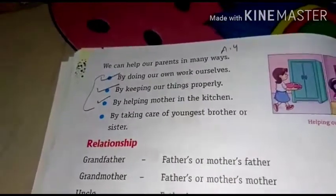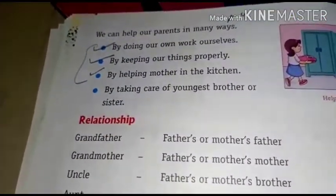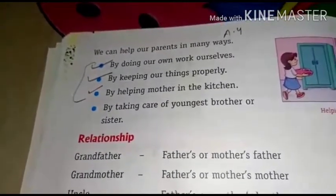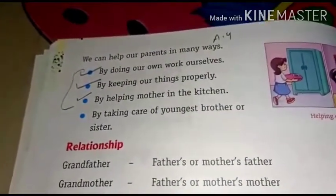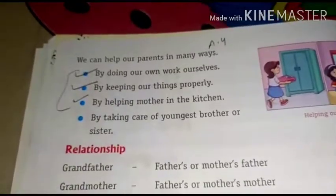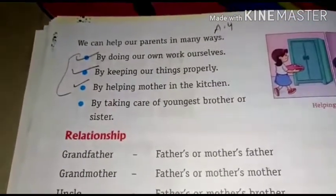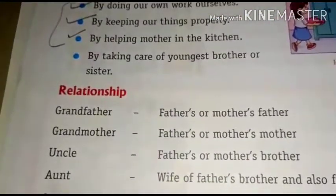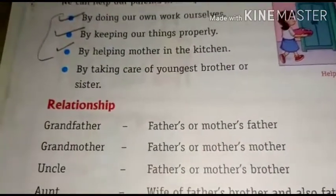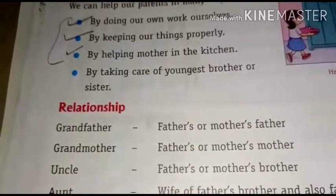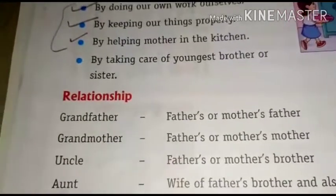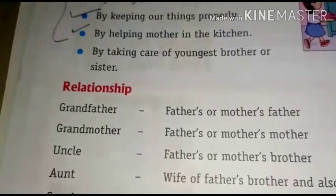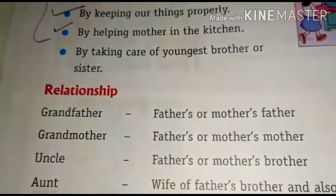We can help our parents by doing our own work ourselves — like brushing our teeth daily, keeping our things properly. By helping mother in the kitchen — you can cook with her, or if she is cutting vegetables, you can wash them for her, or get vegetables from the fridge. You can also help by taking care of your younger brother or sister when your parents are busy.